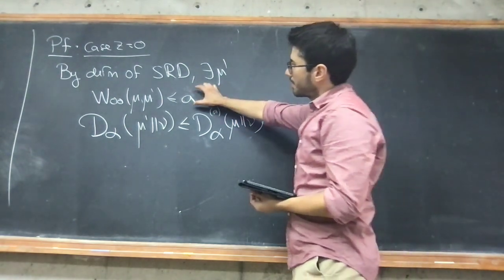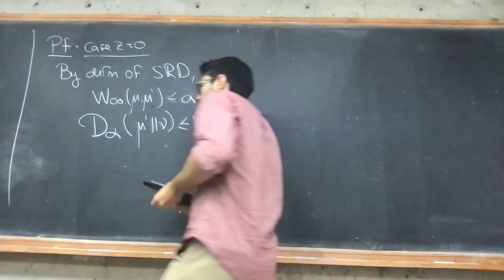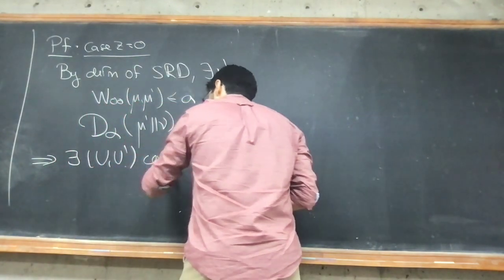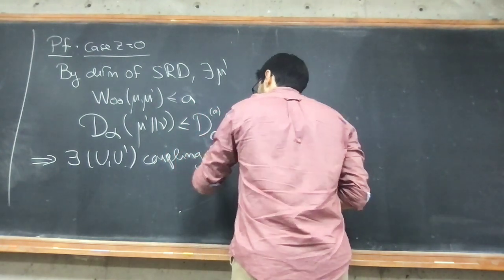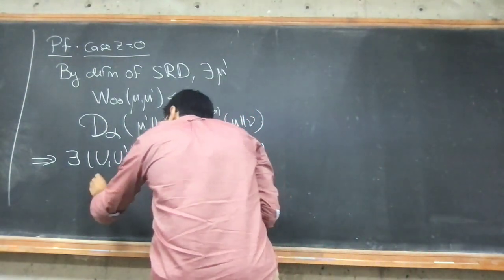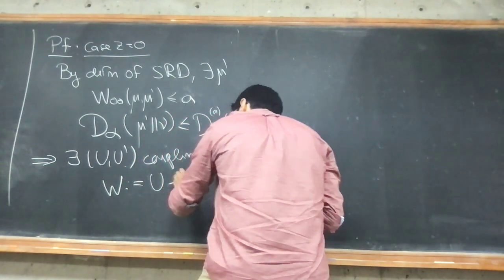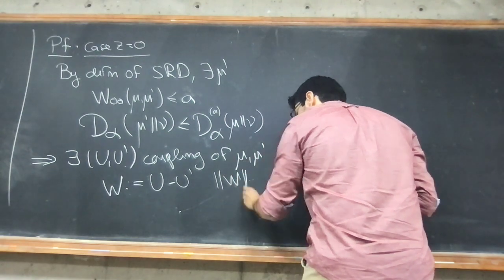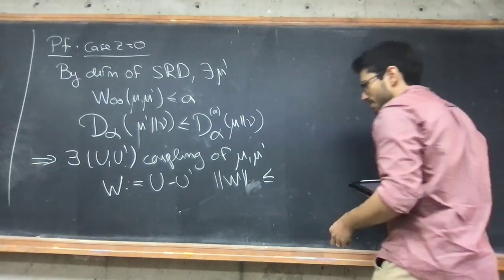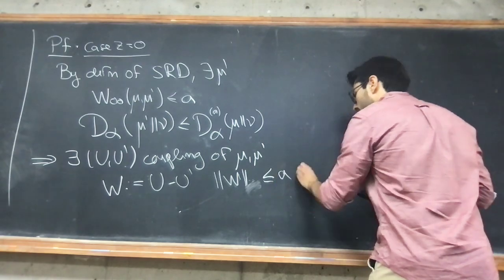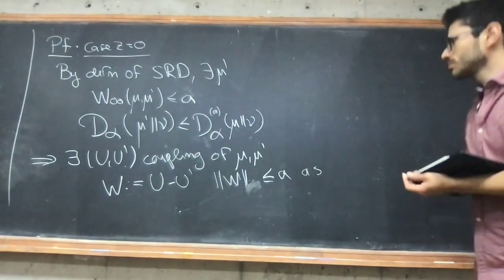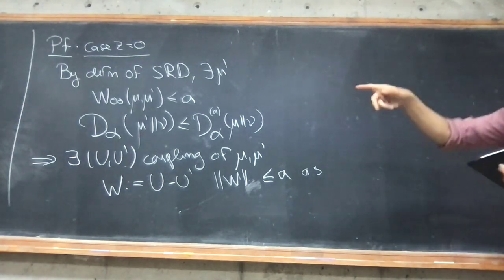In particular, because of this, we have a coupling between these two — a coupling between mu and mu prime — with the property that the random variable w, defined as u minus u prime, is almost surely upper bounded by a in norm. We're working in a finite-dimensional space. Those are the preliminaries we need to then do the argument.